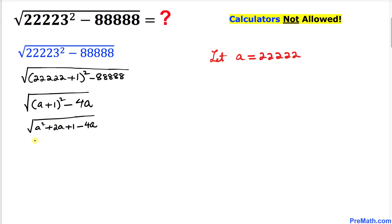Now let's go ahead and simplify this one inside this radical: A squared, and here plus 2A and minus 4A is going to give us negative 2A, and then I'm going to write down plus 1.